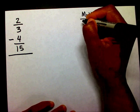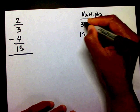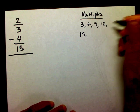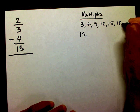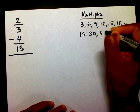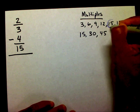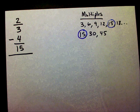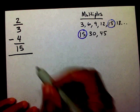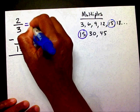Multiples of 3 and 15. My multiples of 3 are 3, 6, 9, 12, 15, 18 — I can go on and on. For 15, I have 15, 30, 45. Right away, I can see that the common multiple they have in common is 15. So that is going to be my new denominator. I'm going to write 15 here and 15 here.